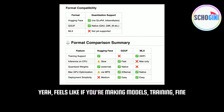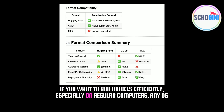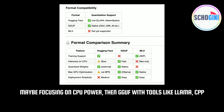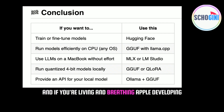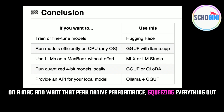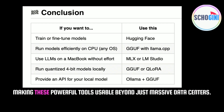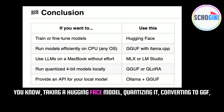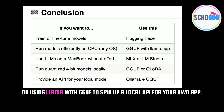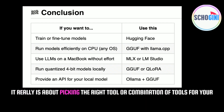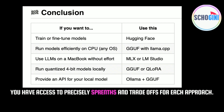The picture is much clearer now. If you're making models — training, fine-tuning, adapting — Hugging Face is your starting point, your workshop. If you want to run models efficiently, especially on regular computers, any OS, focusing on CPU power, then GGUF with tools like Llama.cpp or Ollama looks really strong, particularly for quantized models. And if you're living and breathing Apple, developing on a Mac and want peak native performance squeezing everything out of your M-series chip, then MLX is the framework to look at. Quantization is the thread running through it all, making these powerful tools usable beyond just massive data centers.